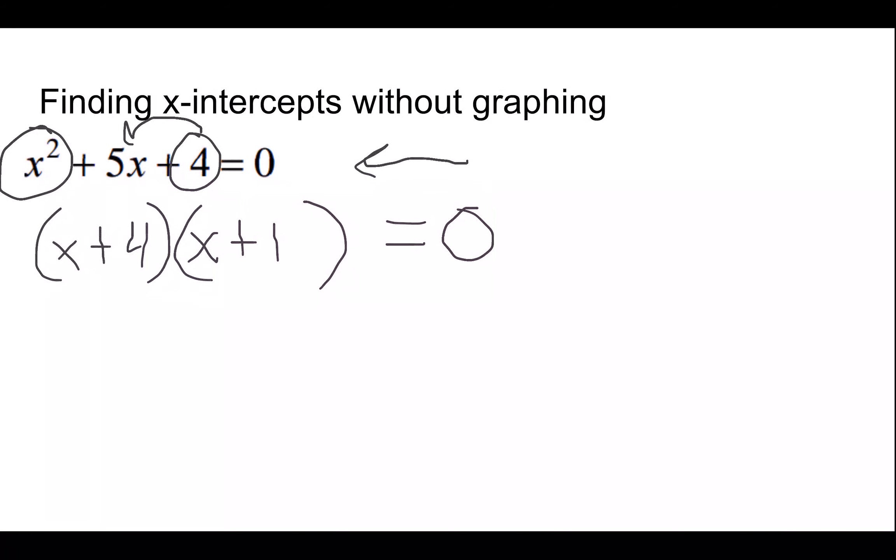And again, with the same logic of saying, okay, if this equals 0, either this over here is my 0 or this over here is my 0. So either x plus 4 equals 0 or x plus 1 equals 0.